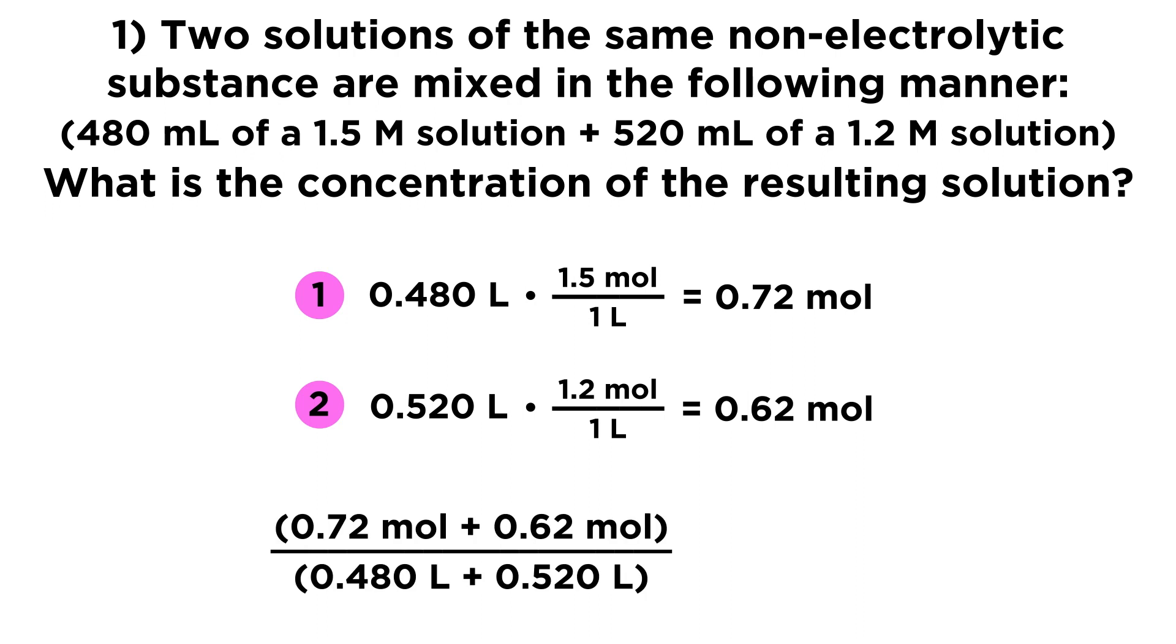And now to get the concentration of the total resulting solution, we need the total moles over the total liters. And the total moles is just the sum of these first two, so 0.72 plus 0.62. And then the total liters, we're just adding these two volumes, so we have 0.48 liters plus 0.52 liters. And so if we do that arithmetic, we get 1.34 molar as the concentration for the resulting solution.